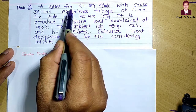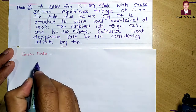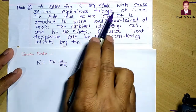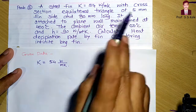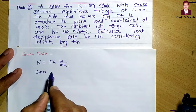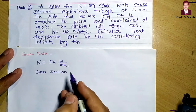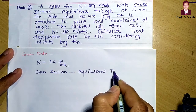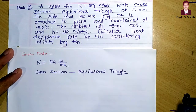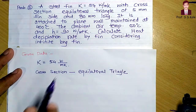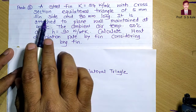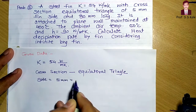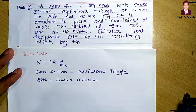There is a steel fin whose thermal conductivity k is given as 54 watts per meter per kelvin. The cross-section of the fin is an equilateral triangle. In the previous problem the cross-section was circular, but now it is an equilateral triangle — a triangle where all three sides are the same. The side of the equilateral triangle is 5 mm, which we convert to 0.005 meter.